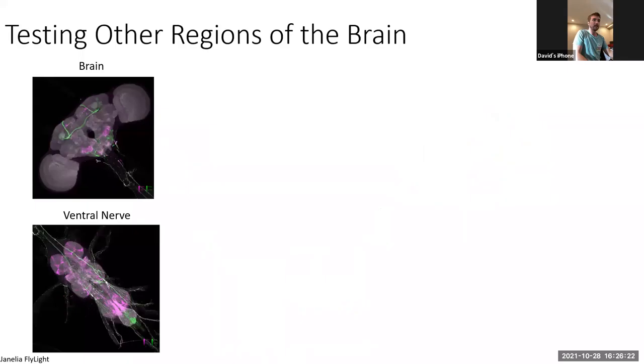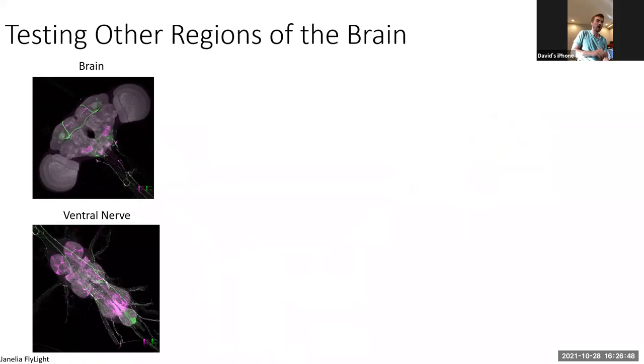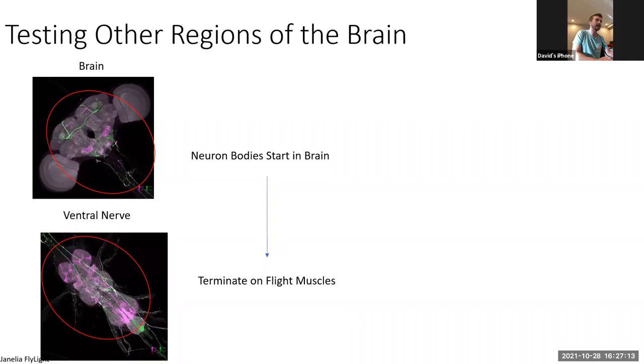And so we thought, you know, smell is cool, but we can maybe start exploring other regions of the brain. So what's really convenient about fruit flies is that they have an incredible number of genetic tools to really express any kind of protein. In our case, the red sensitive light channel in very specific neuron subpopulations. So we took this one line of flies that will express the light sensitive protein in a population of neurons. And what exactly these neurons are is not important. But the important part is that the neuron bodies start in the brain, and they terminate on motor units in the flies flight musculature. So people in tethered flight and sort of non-free flying experiments have shown that, you know, if they activate these subpopulations of neurons, it increases the wing stroke amplitude of a fly.